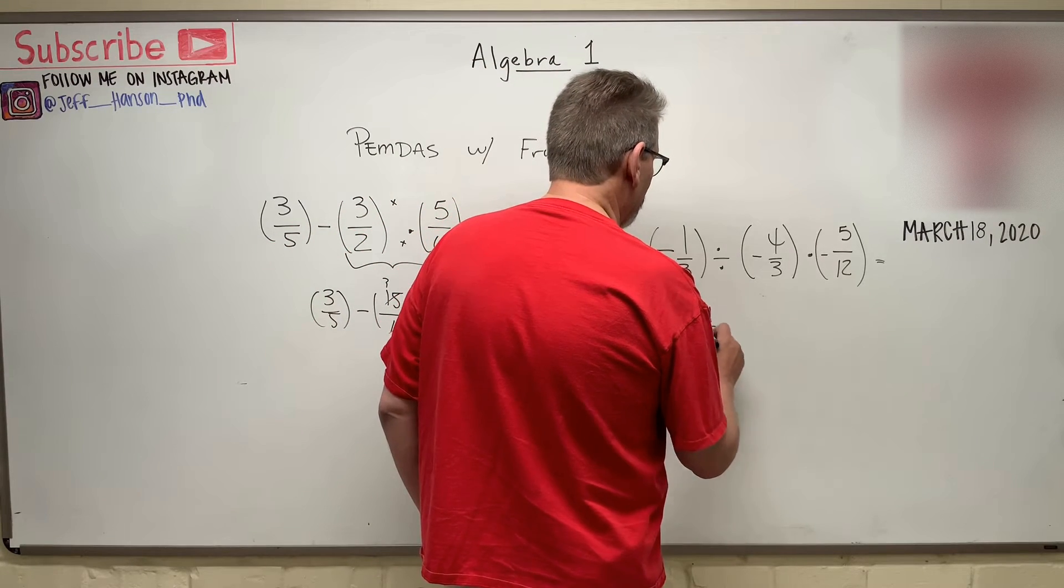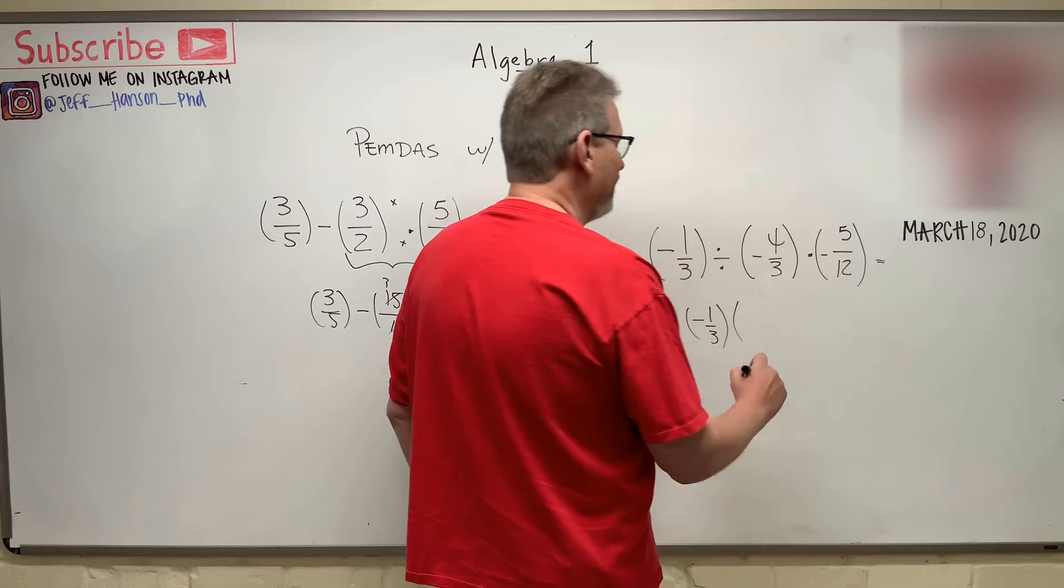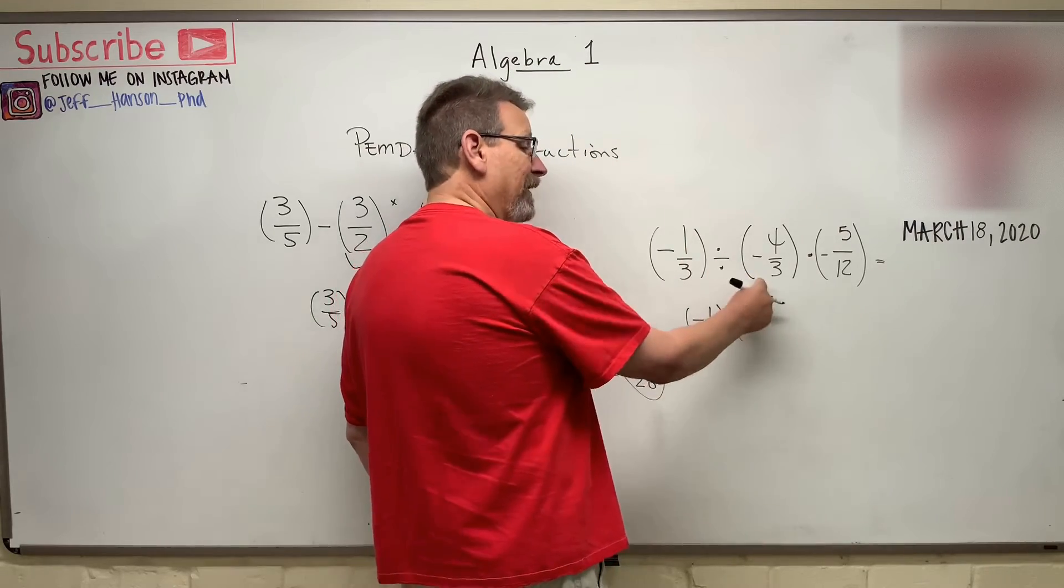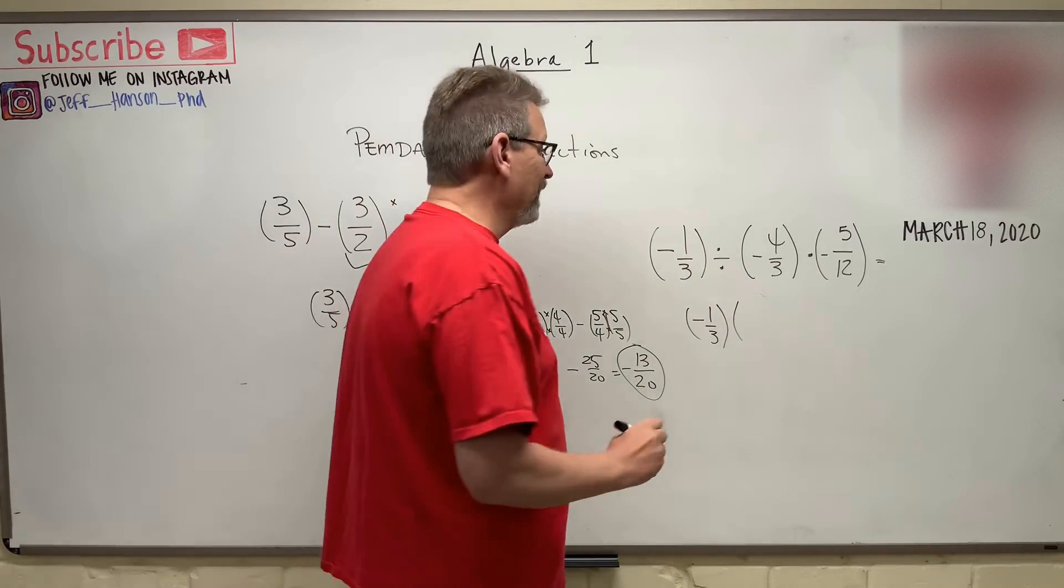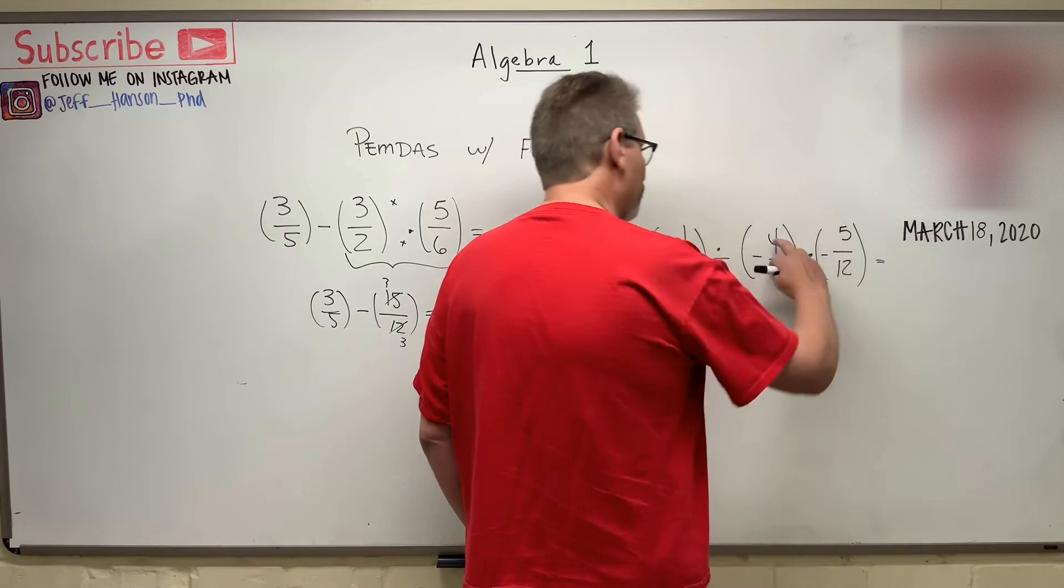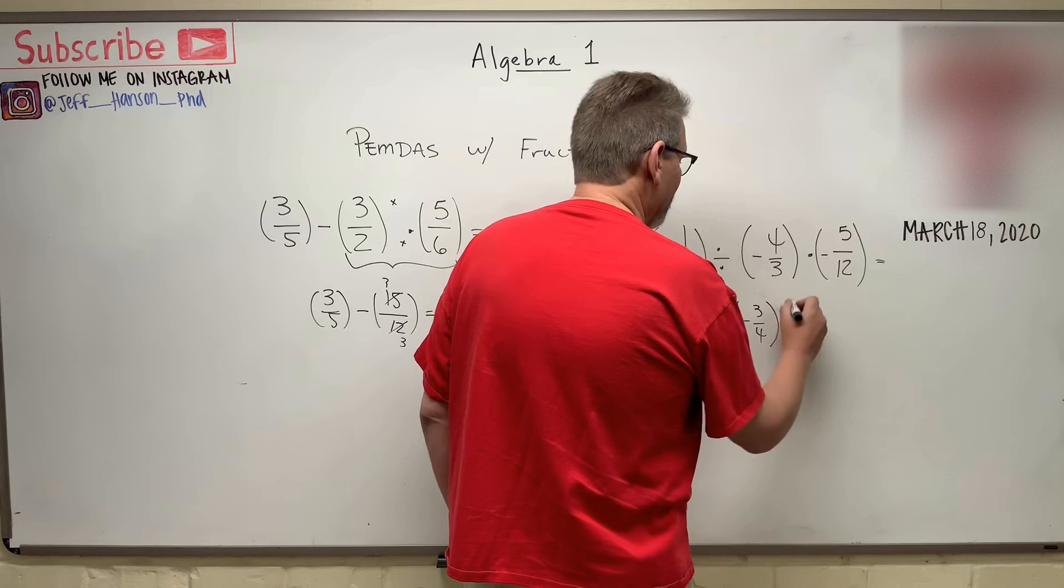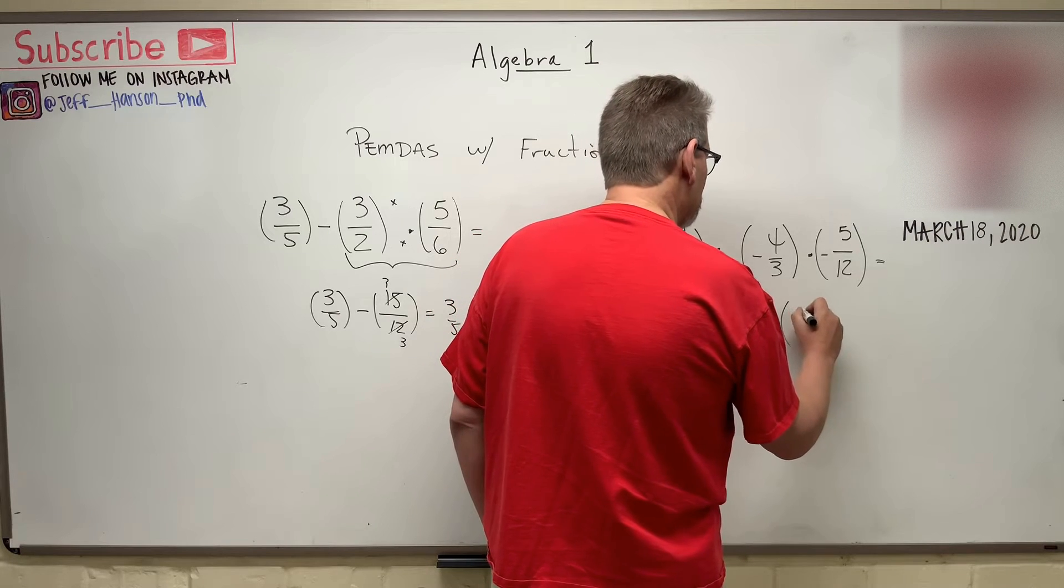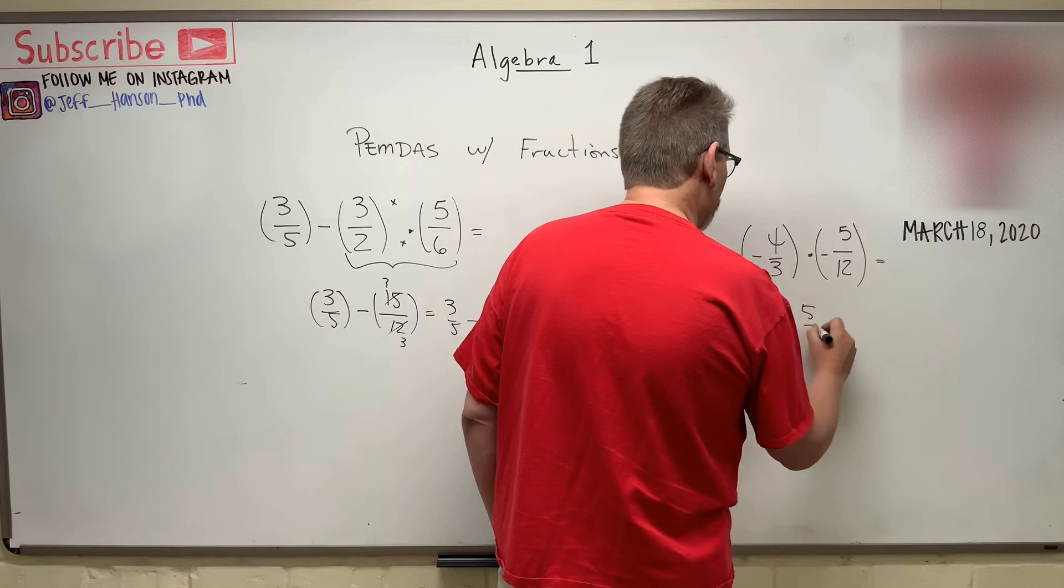Minus 1/3 times - divide by a fraction is the same as multiply by the reciprocal. So minus 3/4, I just flipped that over, and then times negative 5/12.